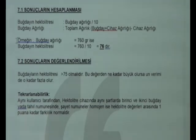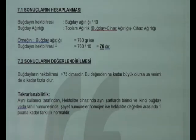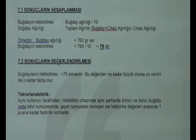Calculation of Hectaliter value. Wheat weight: 760 grams. Hectaliter value: 760 divided by 10 equals 76.